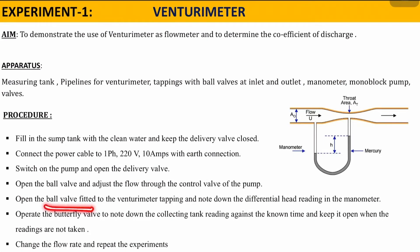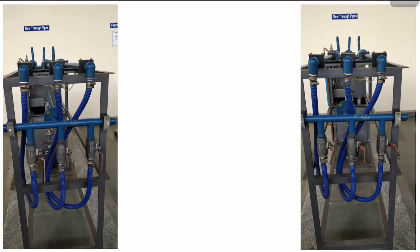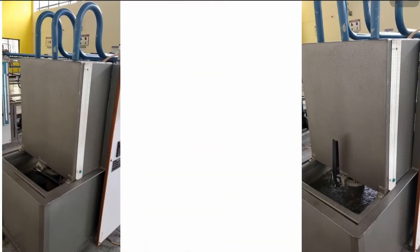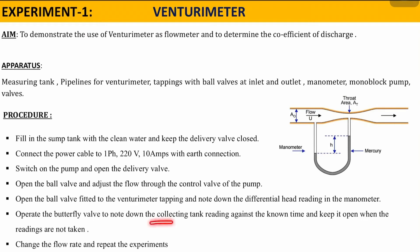Next, operate the ball valve fitted for the venturi tapping and note the differential head in the manometer reading. The three different setups are for the venturi meter, orifice meter, and flow meter. The knobs parallel to the pipe mean it is open; perpendicular means it is closed. This is the sump tank. To fill clean water, the setup must initially be in a closed condition. If the valve is parallel to the flow direction, the water tank is open.